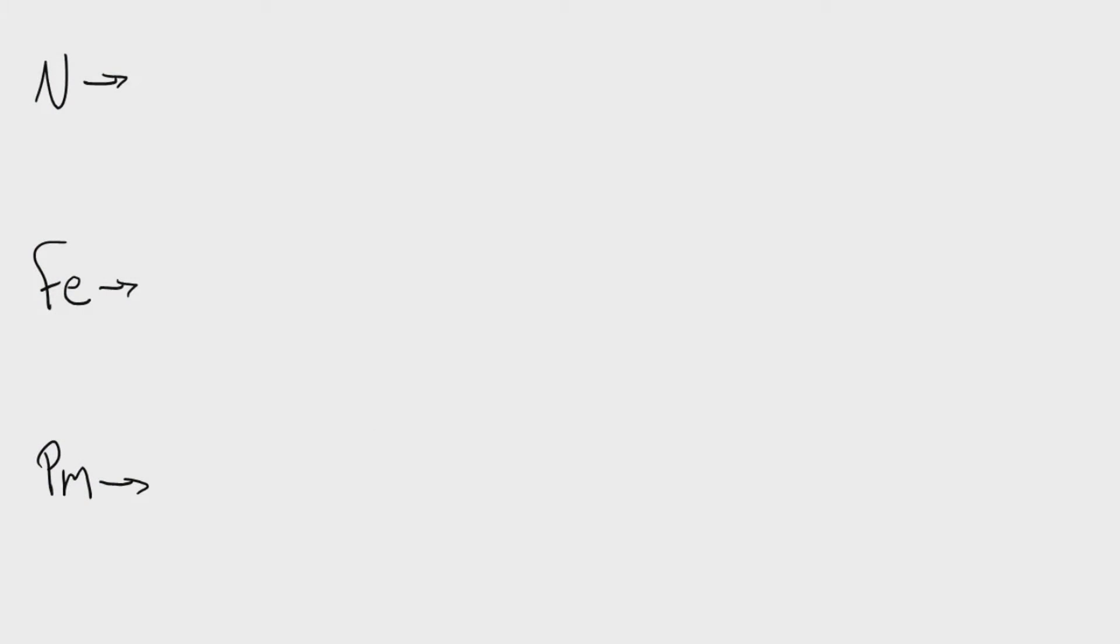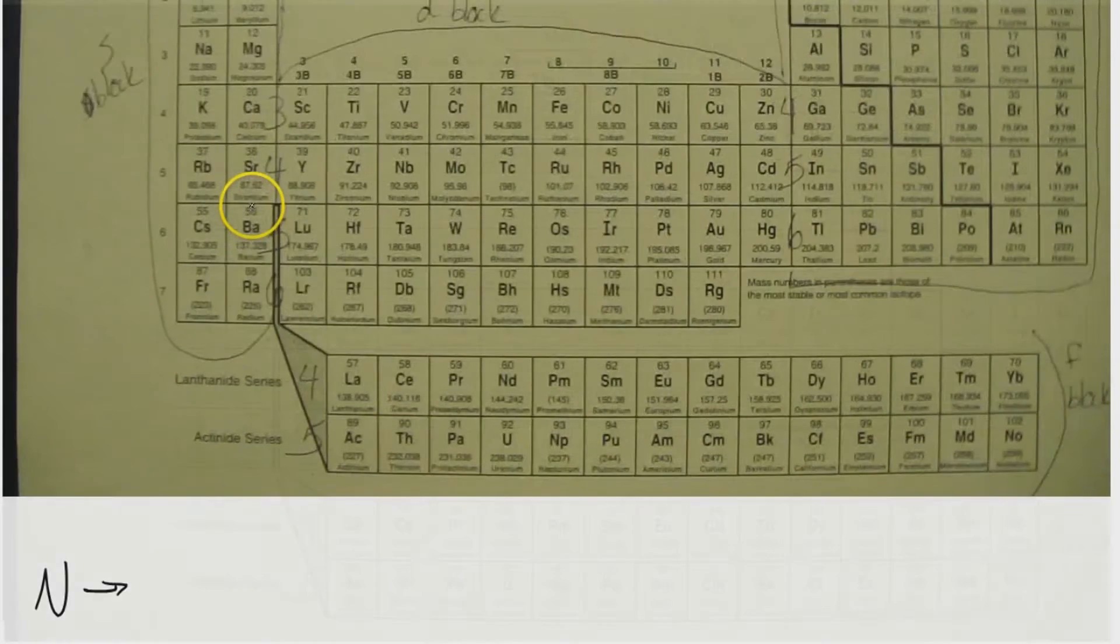Alright, so it's time to learn how to write electron configuration for neutral atoms. And I've got three examples here to show you. So we're going to start with nitrogen here, which is the easiest one.